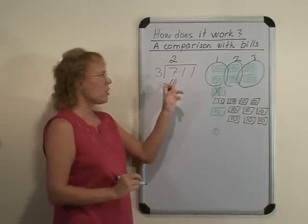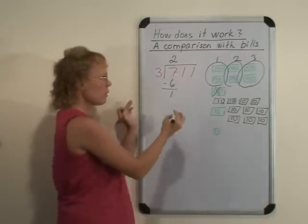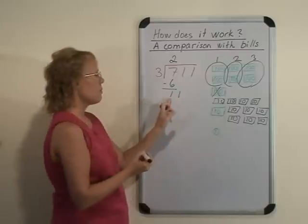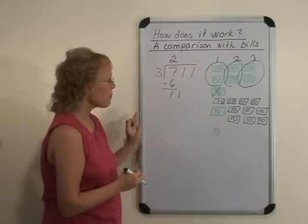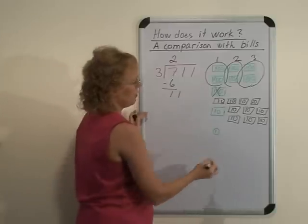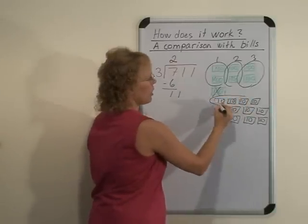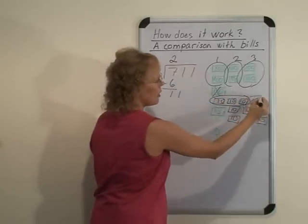In the long division, we are dropping down this one, one ten, next to the one hundred, and we have now eleven tens that we can continue dividing. Now one person here can get three tens, another can get these three, and another can get these three tens.